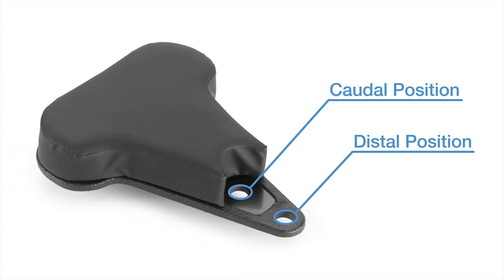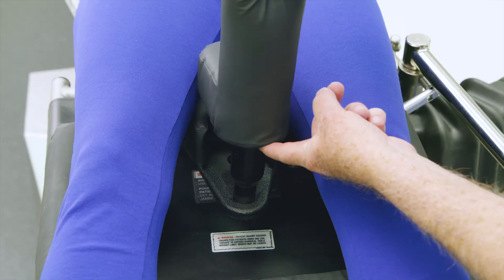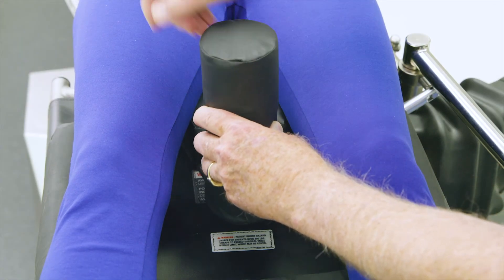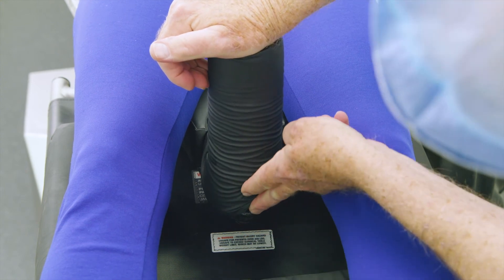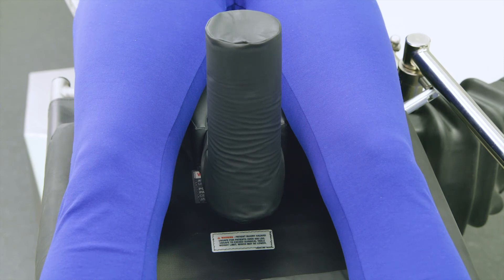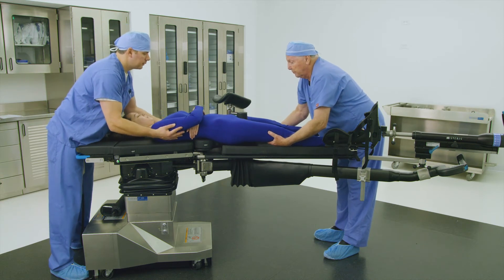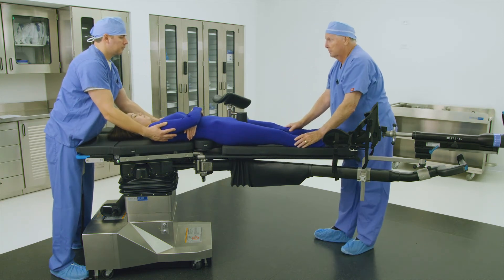There are two positions in the sacral rest to facilitate positioning requirements for a range of patients and to improve imaging area with unobstructed views. Most patients require the post inserted in the distal position; taller patients typically require the post inserted in the caudal position. Place the desired perineal post and pad into the appropriate hole on the sacral rest. Ensure the post is fully seated — failure to ensure correct placement could result in patient injury during active traction. Finally, shift the patient snug against the perineal post, ensuring there is no space between the patient's perineum and the perineal post.